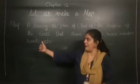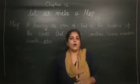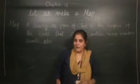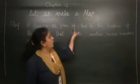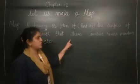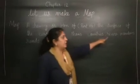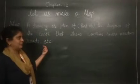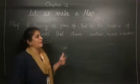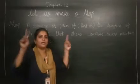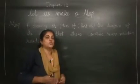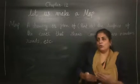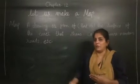First, I need to write the meaning of map. What is the meaning of map? Map is a drawing or a plan of the surface of the earth that shows countries, rivers, mountains, roads, etc. Like earth's surface or earth's area, which is drawing through, and like this plan, we have information about that area.